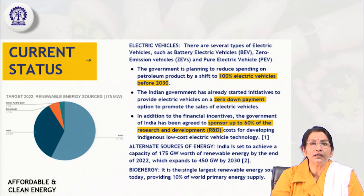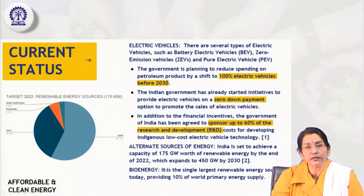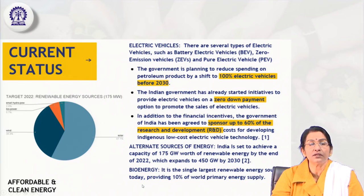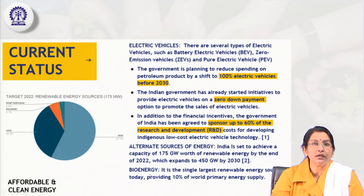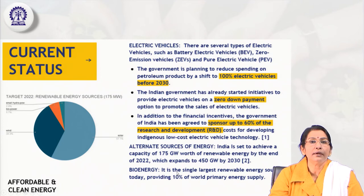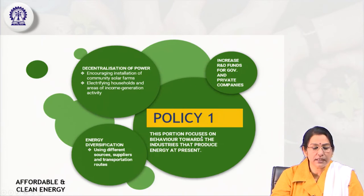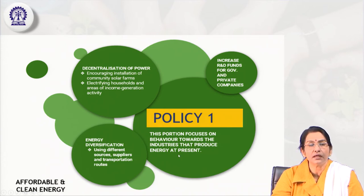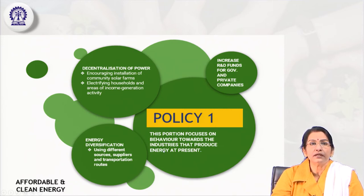Alternate sources of energy include not only solar, wind, and hydro energy, but also bio energy. Bio energy is the single largest renewable energy source, providing 10 percent of the world's primary energy, generated from plant bioproducts and recycling. Policy 1 focuses on the behavior of industries that produce energy at present — how the industries are producing, consuming, and using it.